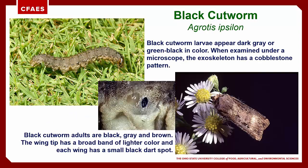Black cutworm larvae are generally dark gray to black, often with a dark greenish cast, and often have a single broad lighter colored stripe down the back. The head capsule is a mild brown color, and another diagnostic feature is the fine cobblestone pattern seen on the exoskeleton, which can barely be seen with a hand lens. The adult moths tend to hide in the ground, grasses, or shrubs during the day, but come out at night to feed on nectar. The adults are generally shades of gray with overtones of brown; when wings are folded, the basal area appears dark and the tips have a band of lighter color. Each wing has a black dagger-shaped mark, which gives them another common name — the dart moth.